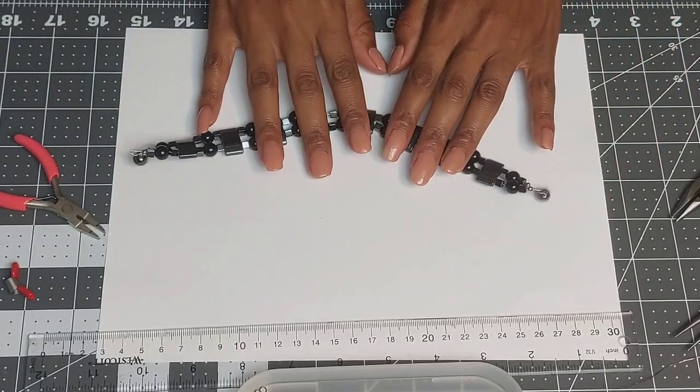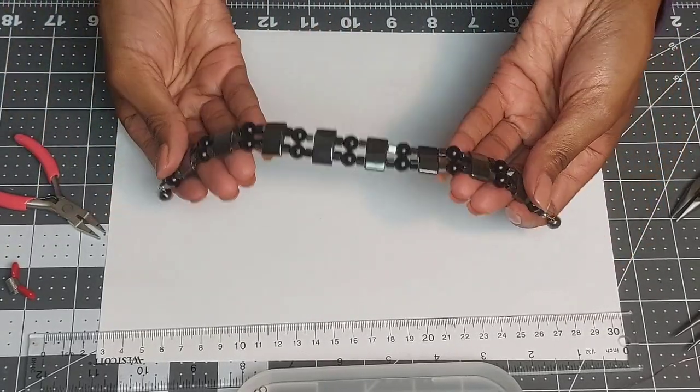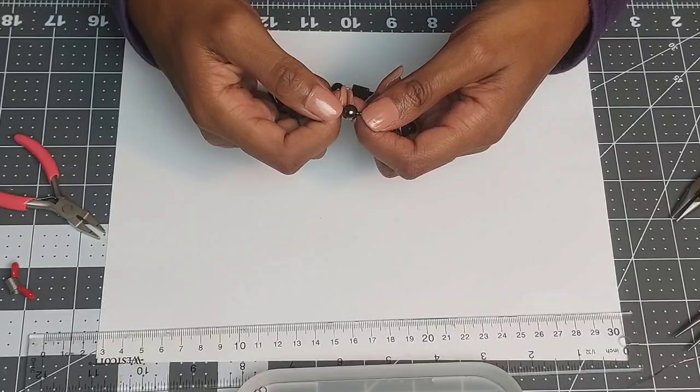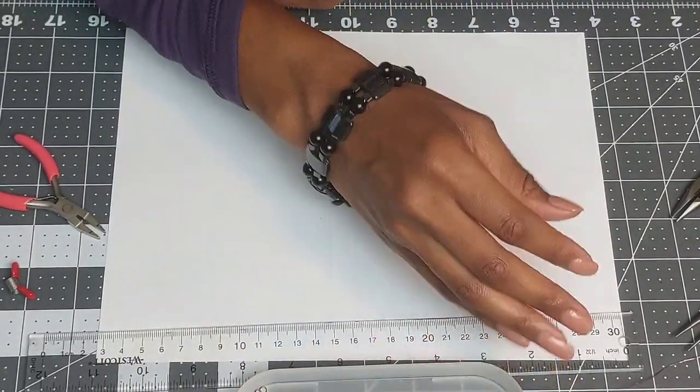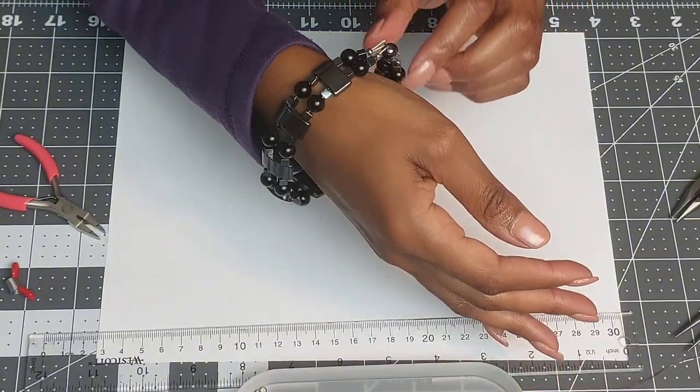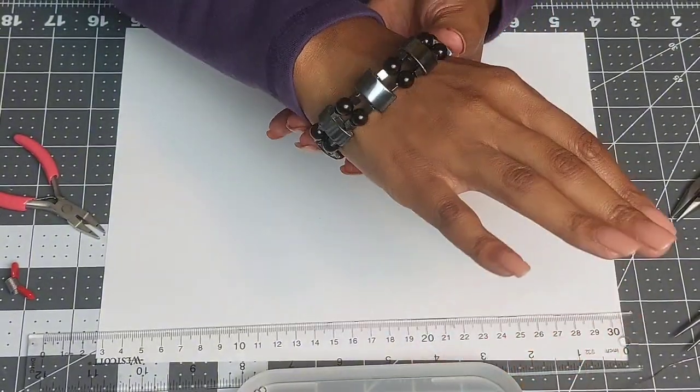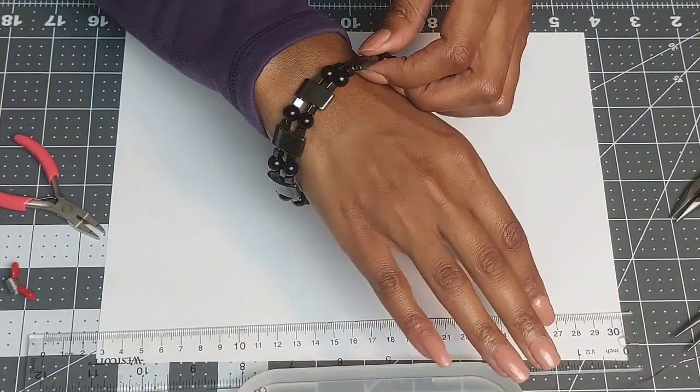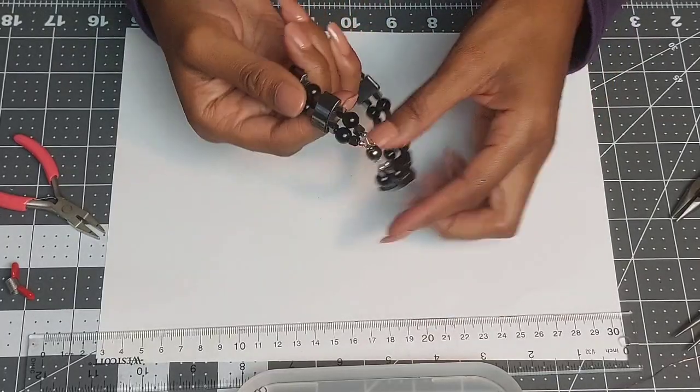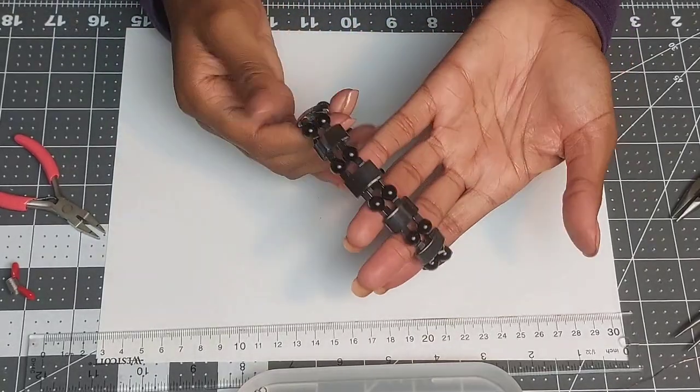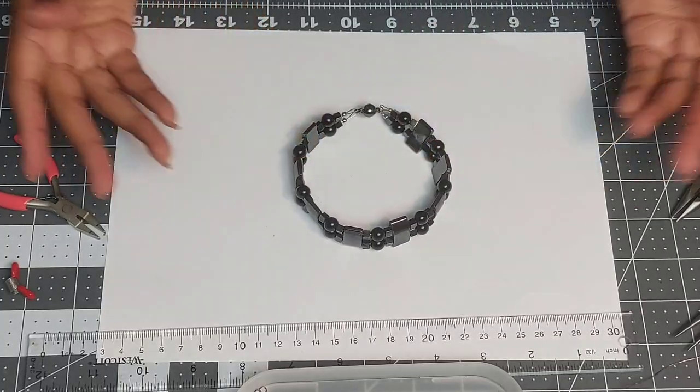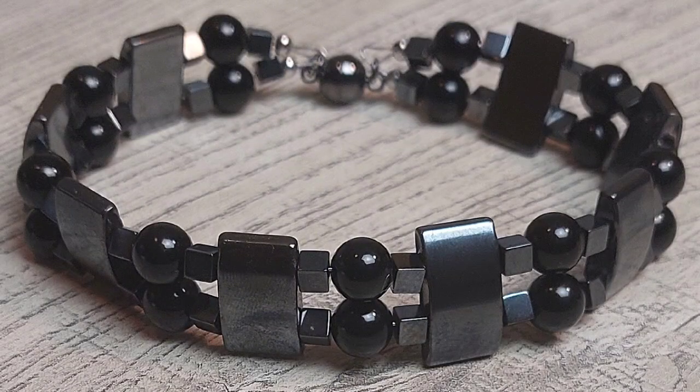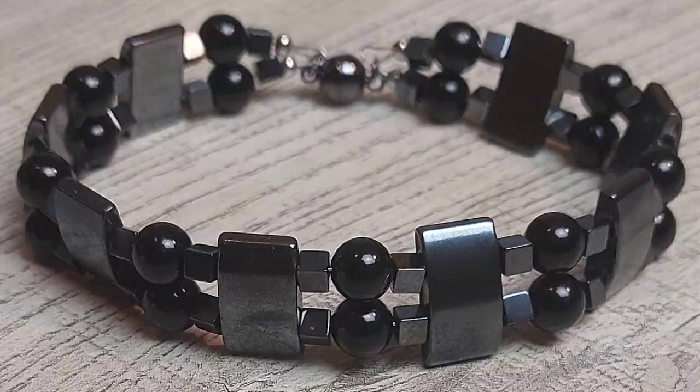Okay, so here is our double-stranded hematite bracelet. It's a little big for me. However, we want you to get some of the effects. I hope the instructions were clear enough that you will be able to make this bracelet yourself. As always, please like, share, and subscribe. If you have any questions or comments, please leave them below. And I thank you for watching. See you in the next video.